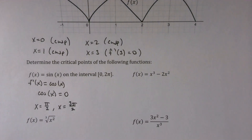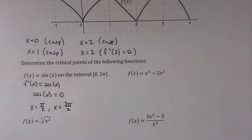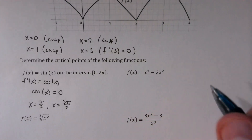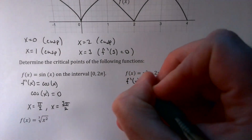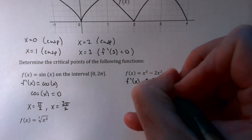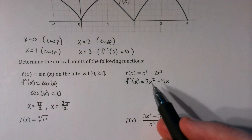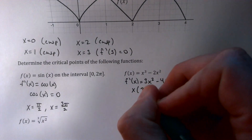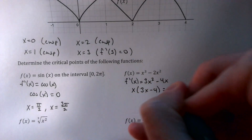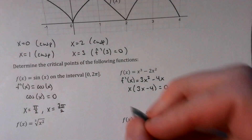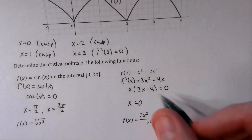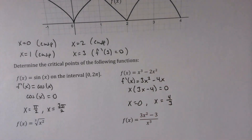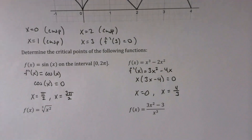For f(x) = x³ − 2x², f′(x) = 3x² − 4x. Setting it equal to zero and factoring out x gives x(3x − 4) = 0. So we have critical points at x = 0 or x = 4/3. We'll be doing a lot more with these critical points soon, but this is how we find them.